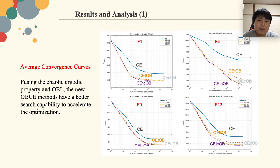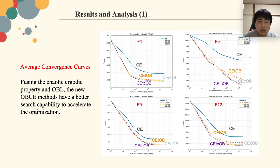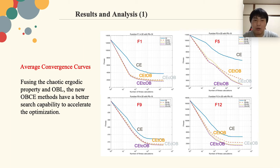In these pictures, the x-coordinate presents the number of fitness calculations, and the y-coordinate presents the fitness value. A lower fitness value means better optimization performance. It is obvious that by fusing the chaotic ergodicity property and opposition-based learning, the new opposition-based learning chaotic evolution methods will have better search capability to accelerate the optimization and show better optimization performance.